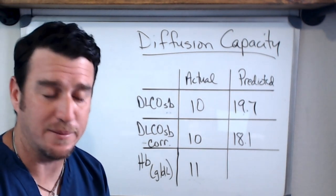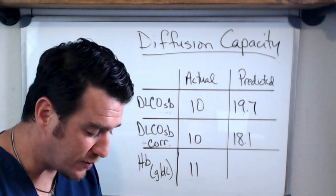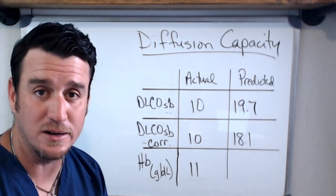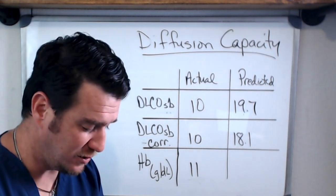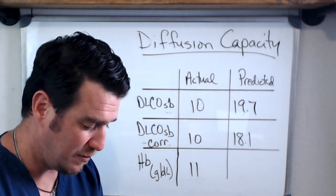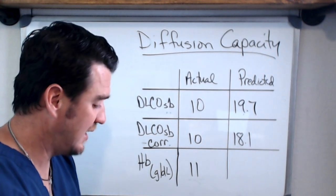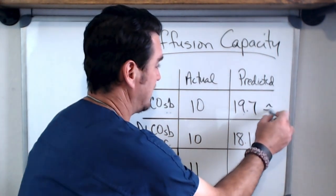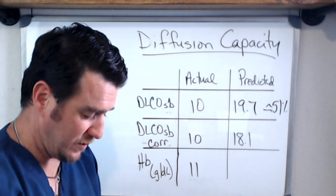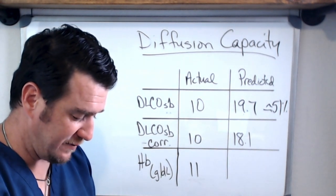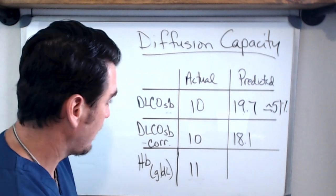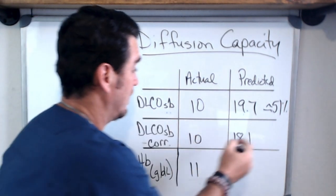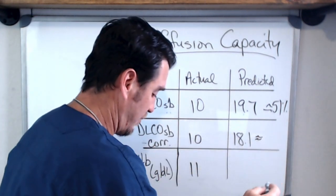You take your actual and you divide it by your predicted. Now you probably don't need a calculator to know that this is not going to be good, but nonetheless let's just use it. If we do 10 divided by 19.7, we get approximately 51 percent. When we do 10 divided by 18.1, we get approximately 55 percent.